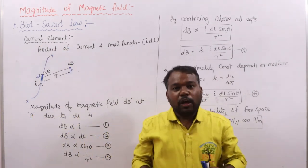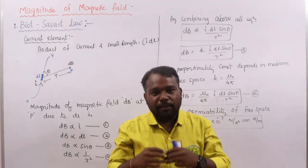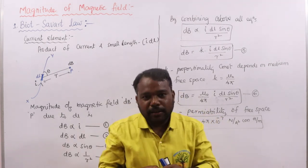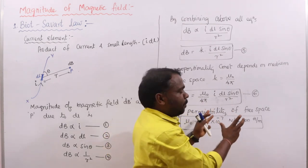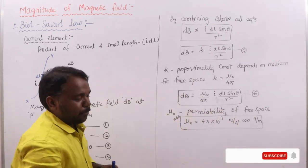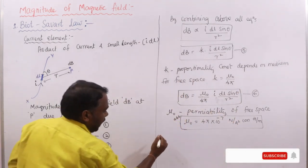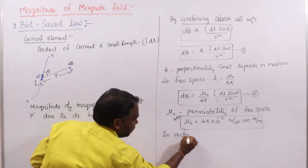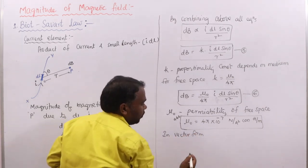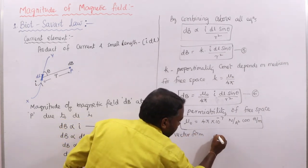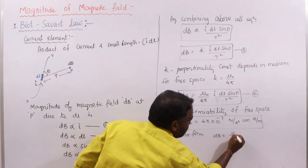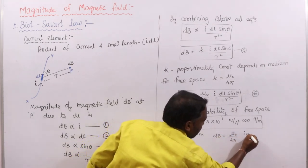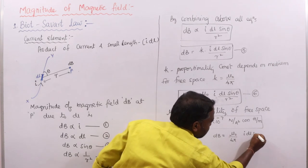This equation gives the magnitude of magnetic field as suggested by Biot and Savart. Since B is a vector quantity, we need to represent it in vector form. To convert the scalar form to vector form, we multiply and divide by r, giving I·dL·R·sine theta / r³ in the numerator.